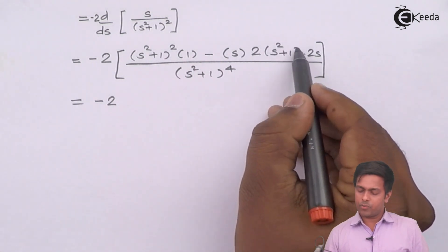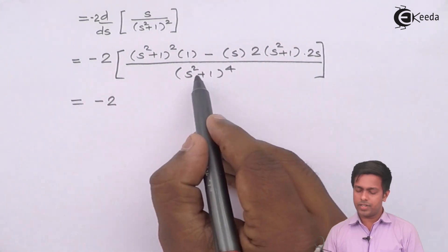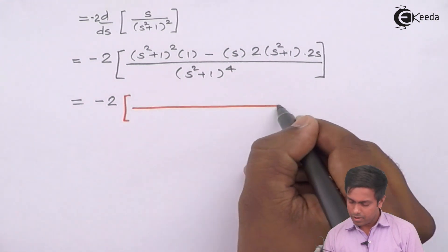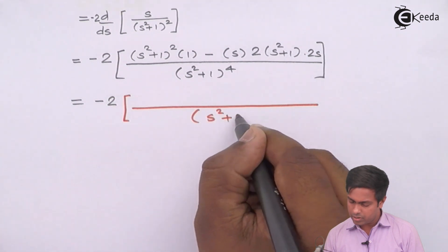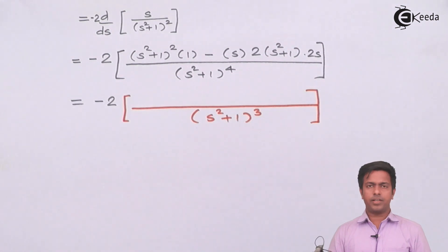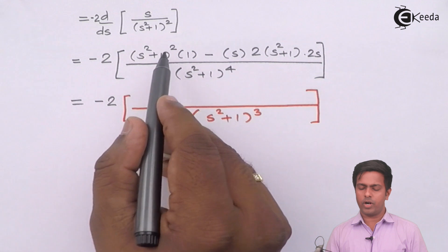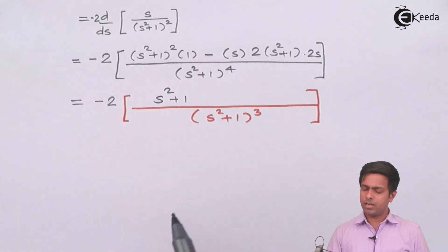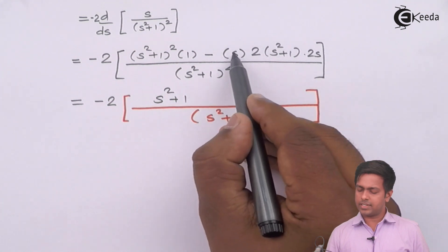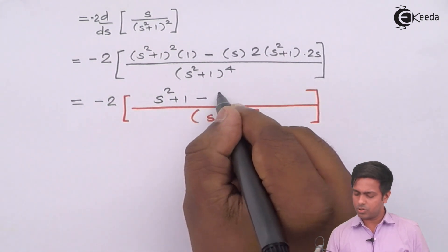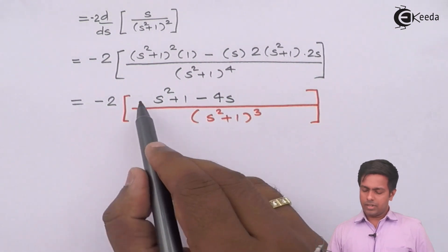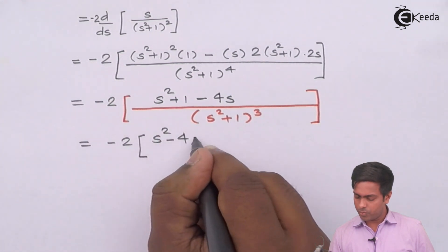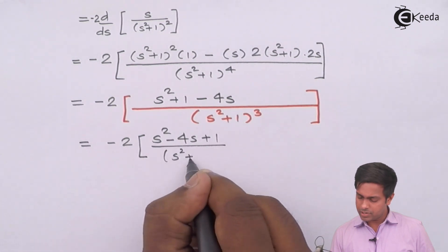From the numerator, we can factor out (s² + 1) common, which cancels one factor from the denominator, leaving (s² + 1)³ in the denominator. In the numerator, one factor of (s² + 1) remains from the first term, giving (s² + 1), and from the second term 2s · 2s = 4s². So the numerator becomes (s² + 1) − 4s² = s² − 4s + 1 (simplified). Multiplying by −2 out front, we get −2(s² − 4s + 1) / (s² + 1)³.